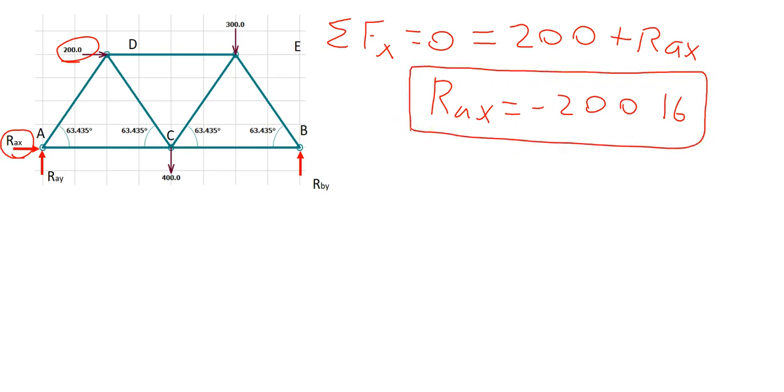And finally, we have four forces acting in the Y direction. So we take the sum of the forces in the Y direction is equal to 0, which is equal to RAY plus RBY minus 400 minus 300.